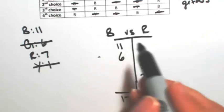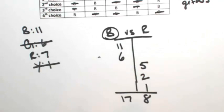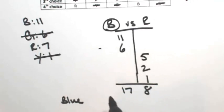So B has more votes, so B, or blue, is the contingent winner.